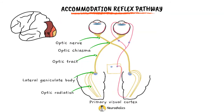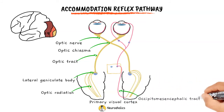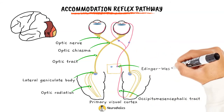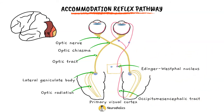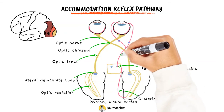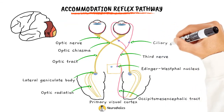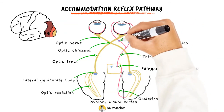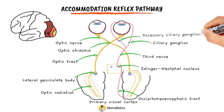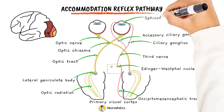Internuncial fibers then pass from area 19 to the pontine center via the occipito-mesencephalic tract. From the pontine center, fibers pass to the Edinger-Westphal nucleus of both sides. From the Edinger-Westphal nucleus, the efferent impulses travel along the third cranial nerve and relay in the ciliary and accessory ciliary ganglion. From there, the fibers reach the sphincter pupillae.